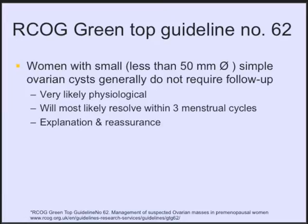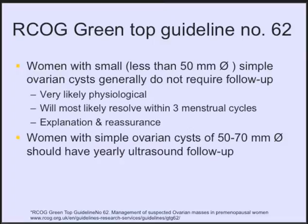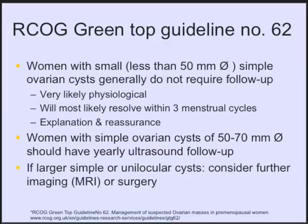I would like to refer to the Green-top Guidelines from the Royal College of Obstetricians and Gynecologists in London, guideline number 62, which gives a great overview of how to manage suspected ovarian masses in premenopausal women. In a woman with a small — less than 50 millimeters in diameter — simple unilocular ovarian cyst, follow-up is generally not required. This cyst will most likely resolve within three menstrual cycles. If the cyst is simple and measures between 50 and 70 millimeters, an annual ultrasound scan is recommended.